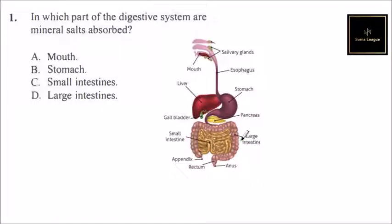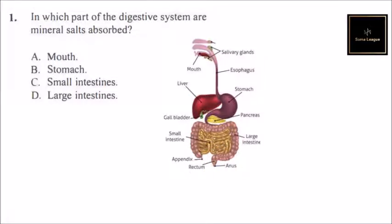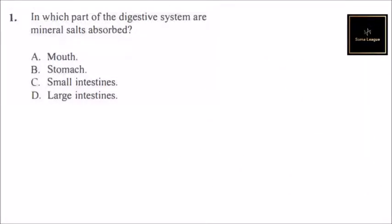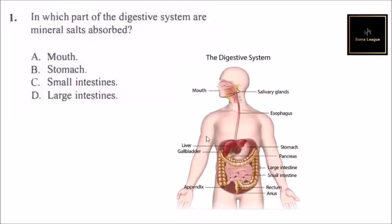From there the food gets into the large intestines, where water is absorbed to dry up the stool, and also those mineral salts that have not yet been digested. We also have the appendix, the rectum, and the anus. That is the digestive system of a human being.